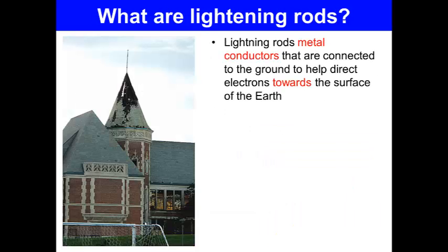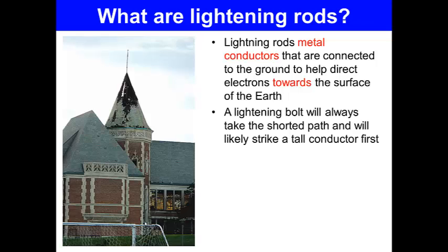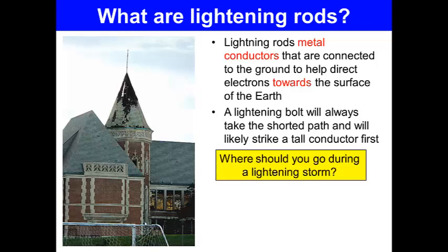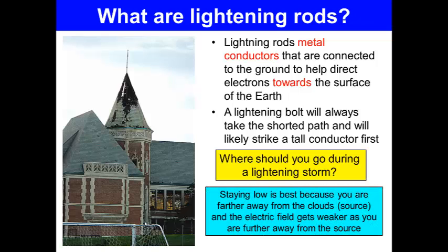What are lightning rods? Lightning rods are metal conductors that are connected to the ground to help direct electrons towards the surface of the earth. A lightning bolt will always take the shortened path and will likely strike a tall conductor first. Where should you go during a lightning storm? The lowest possible point. Because you're further away from the clouds, which is the source of lightning, and the electric field gets weaker as you move further away from the source.